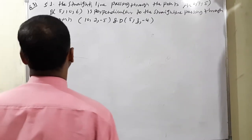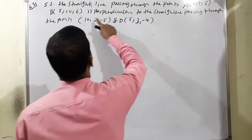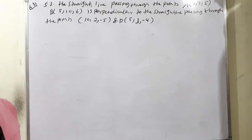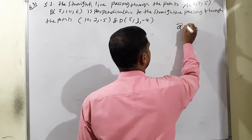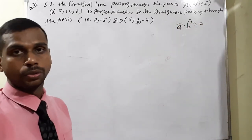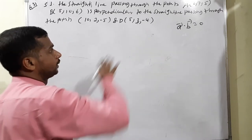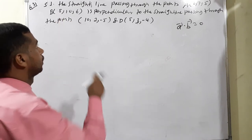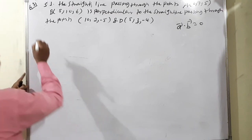Moving to example 6.31: show that these lines are perpendicular. We know that if a·b equals 0, then a is perpendicular to b. So the first two points give b vector and the second two points give d vector. Look at the solution — direction ratio of AB.